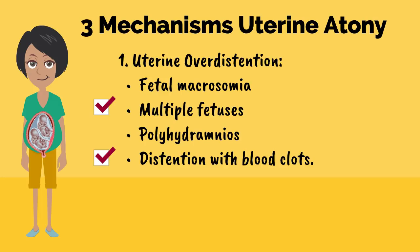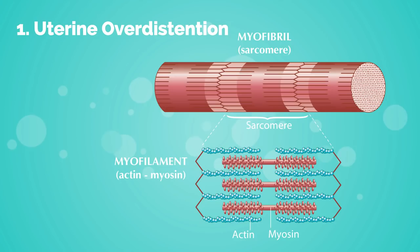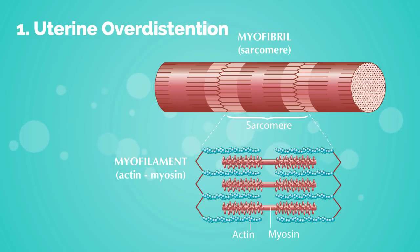There are three main mechanisms that lead to uterine atony. The first mechanism is overdistension of the uterus, which can occur with fetal macrosomia, multiple fetuses, polyhydramnios, and distension with blood clots. Overdistension pulls apart actin and myosin so they cannot overlap to connect and bind, which limits the contractile ability of the smooth muscle.